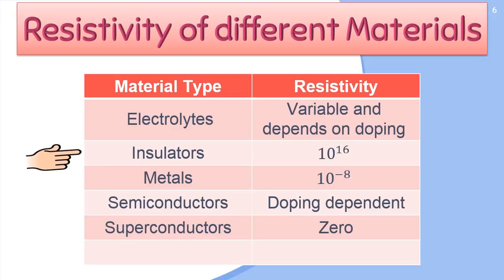Insulators have a very high value of rho as they do not conduct electricity, and their range is 10 raised to the power 16. Metals have small values of resistivity in the range of 10 raised to the power minus 8. Superconductors are those materials that are considered to be great conductors of electricity and therefore acquire zero value of resistivity.